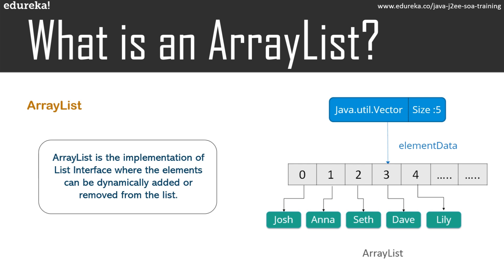Though ArrayList might be slower compared to standard arrays, it can be helpful in programs where there is a lot of manipulation. ArrayList is used to store a dynamically sized collection of elements — it is initialized to a size, but can increase if the collection grows and shrink if objects are removed. Java ArrayList also allows us to randomly access the list, adding elements at the beginning, end, or removing from the middle as needed.